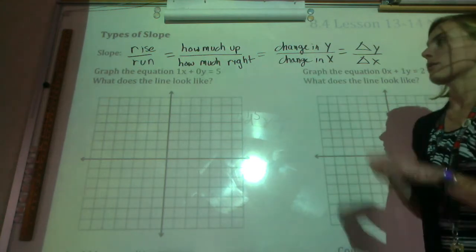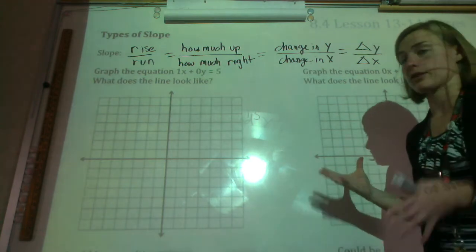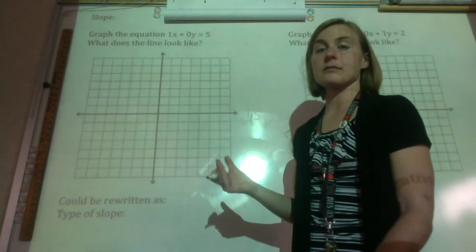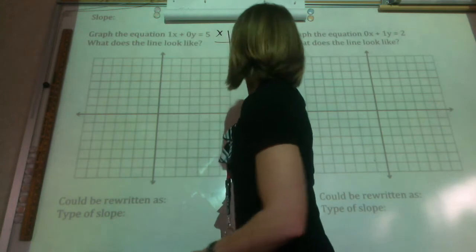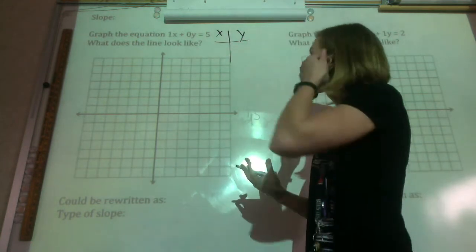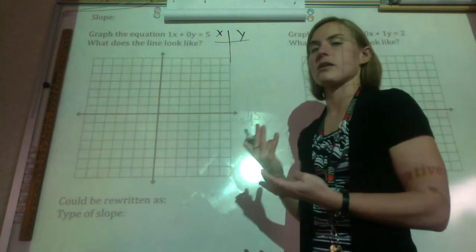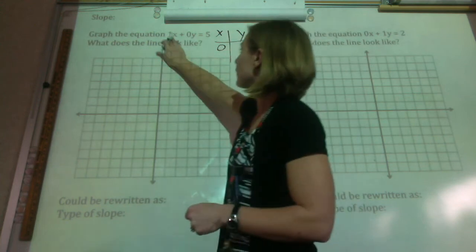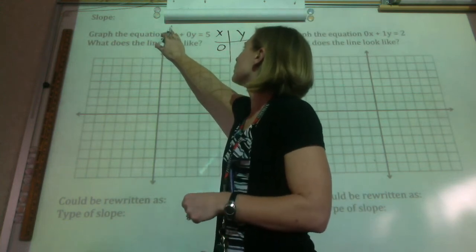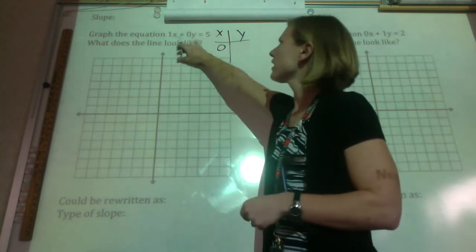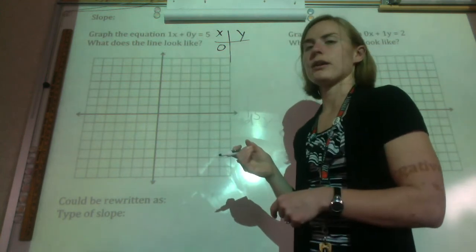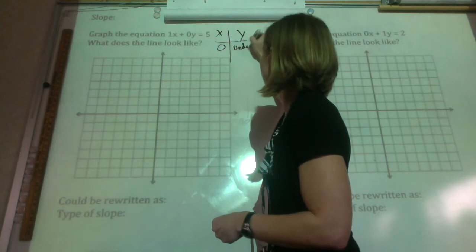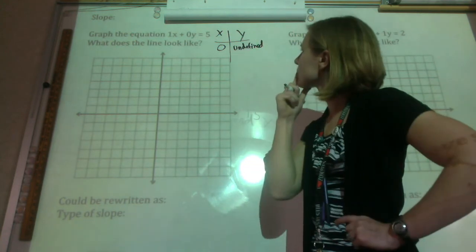So now that we know really what slope is, let's take a look at some different types of slope. So if we are going to graph 1x plus 0y equals 5, we need to get some points. So we need to make a t-table. Remember, we get to choose what we put in for x. So I want to choose things that will make it so it kind of comes out evenly. So I'm going to choose 0 first off. Makes it nice and simple. If I put in 0 for x, that goes away. So now we have 0y equals 5. So if we divide 5 by 0, 5 divided by 0, you aren't supposed to divide things by 0. That's technically undefined.